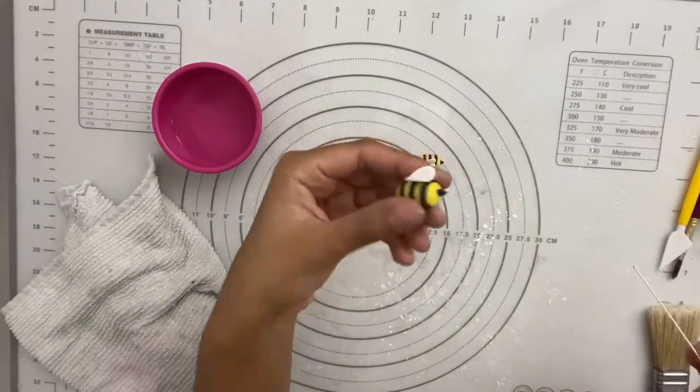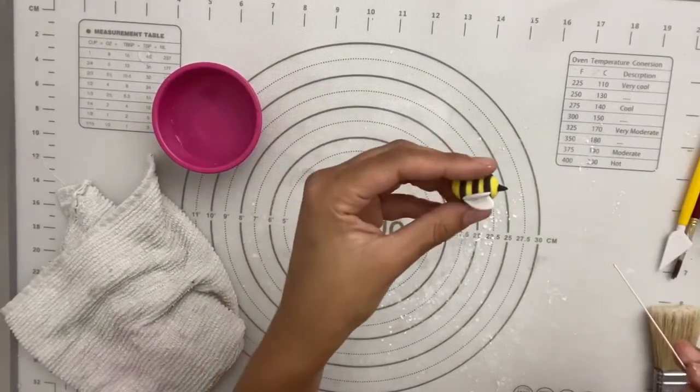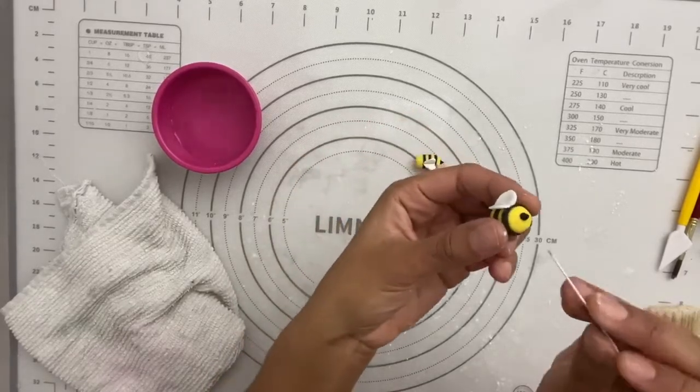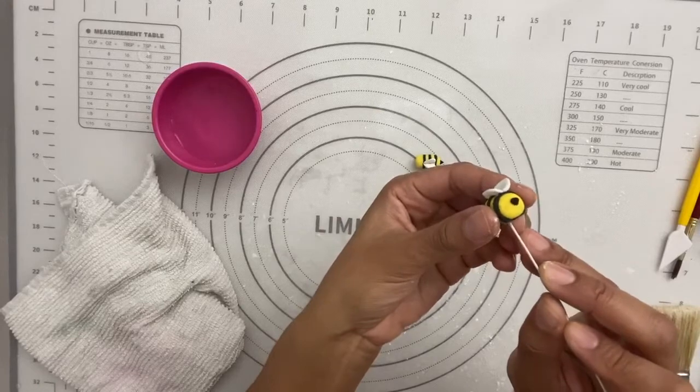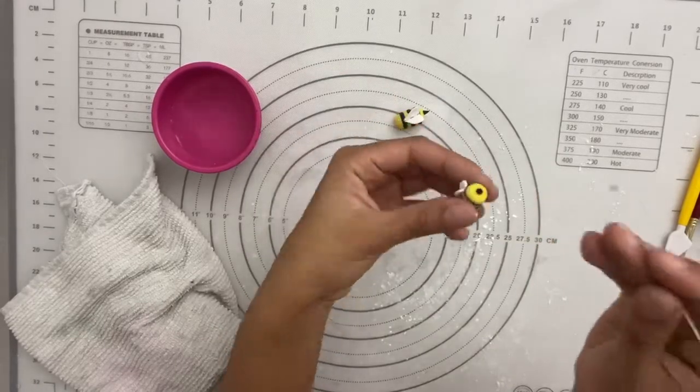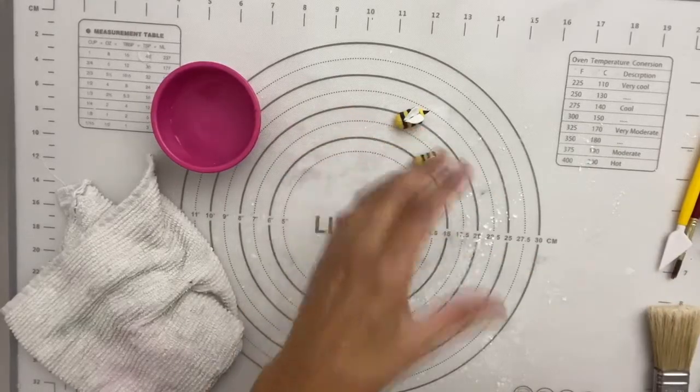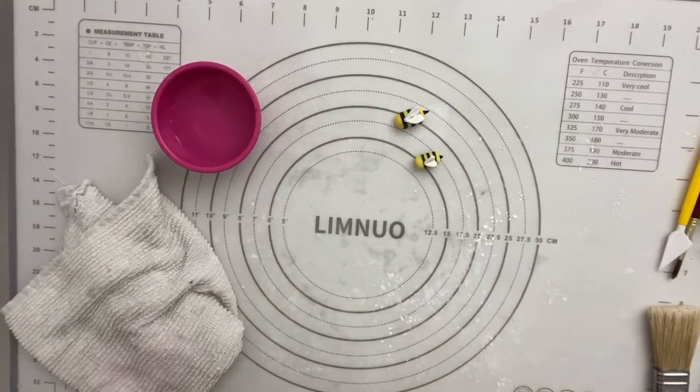And typically with these bees, they're going to be put on your cake. Some of them will be on wire. So they'll be sort of flying around the cake. So at this stage, I usually poke the bottom with wire and let it dry with a little hole. And then once they're fully dry, I'll stick them on the wire when they are ready to go on the cake.